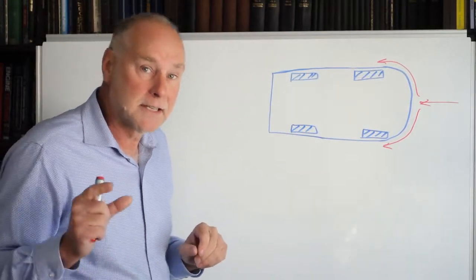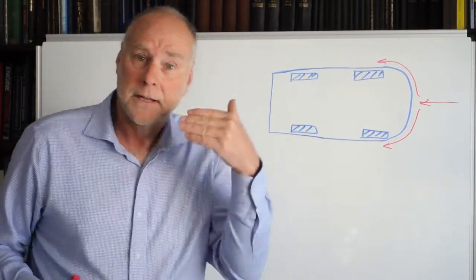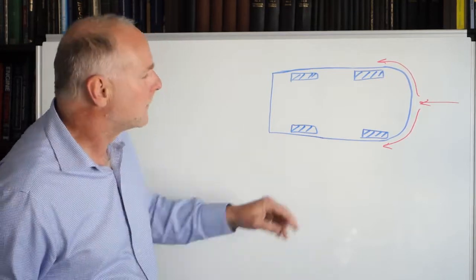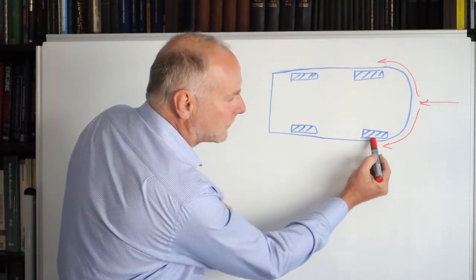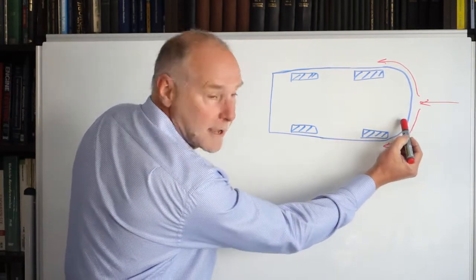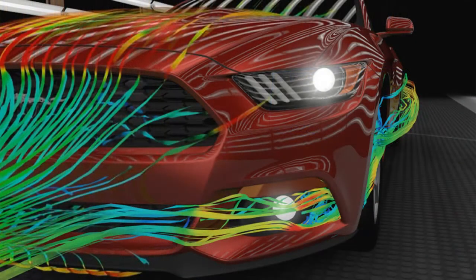The other way in which air is encouraged to get past the front wheels, in addition to the design of the wheel, is the use of air curtains. So these are little openings that let air come through past the outer face of the wheel, with air being picked up right in the front bumper. I've got another video that talks about air curtains.